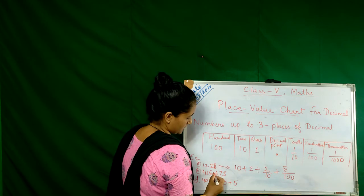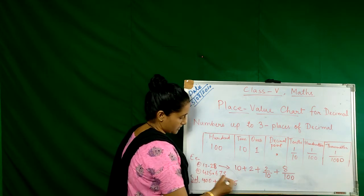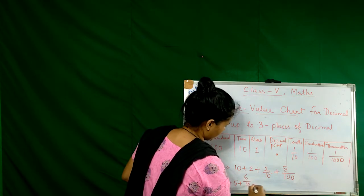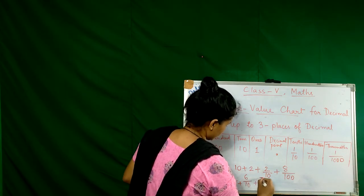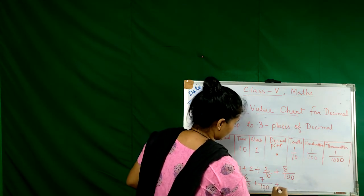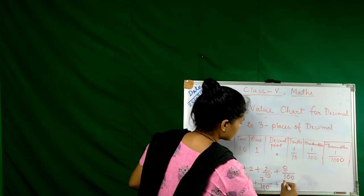After decimal, we have to write like this: seven over ten plus three over hundred. So three is here, we write three over thousand.